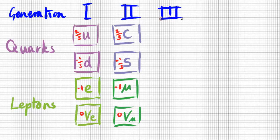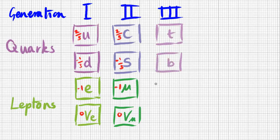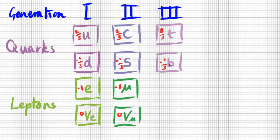At even higher energies, they found the third generation of matter. You need to know the names: the top quark and the bottom quark, which have the same charges as their partners in the previous generations. Interestingly, they also have alternative names — truth and beauty — rather than top and bottom. The beauty particle may have a lot to say about why the universe is made mainly of matter rather than antimatter, and physicists would rather be called 'beauty physicists' than 'bottom physicists.'